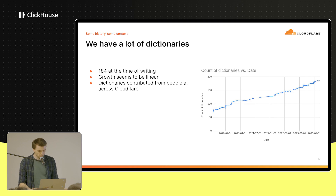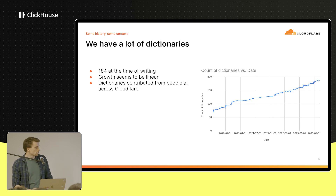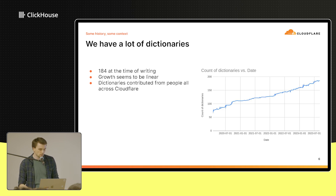At Cloudflare, we have 184 dictionaries deployed in various places. I've traced out how we grew over time, and the point I really want to emphasize is that those dictionaries are contributed by engineers all across Cloudflare. On the ClickHouse team, we basically never make dictionaries — it's other teams that make them and we just look after them.